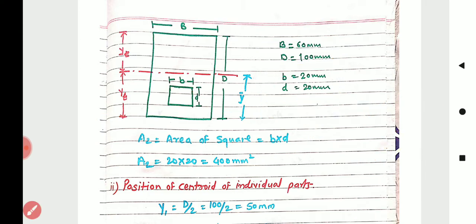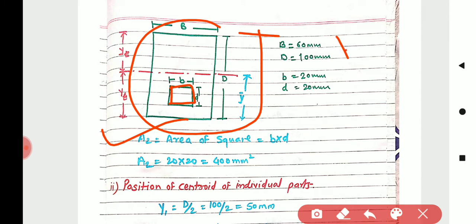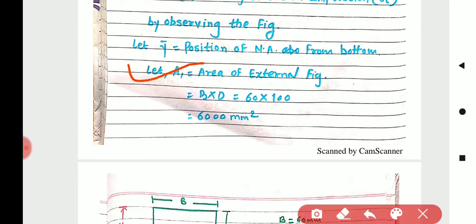Since the inner section is hollow, we subtract the smaller area from the larger area. First, find A1 — the area of the external rectangular figure — which is B × D = 6000 mm². Then find A2 — the area of the hollow square section — which is 20 × 20 = 400 mm².